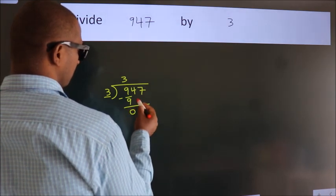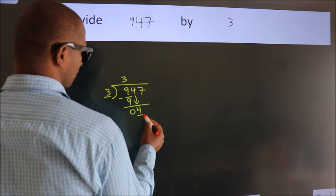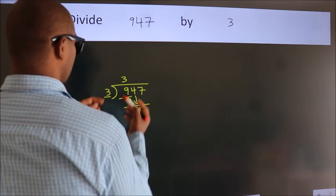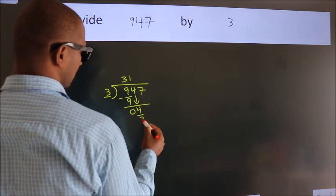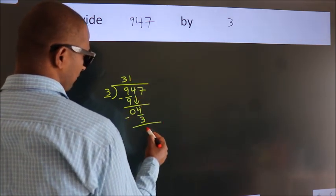After this, bring down the beside number. So 4 down. So 4. A number close to 4 in 3 table is 3 once 3. Now we subtract. We get 1.